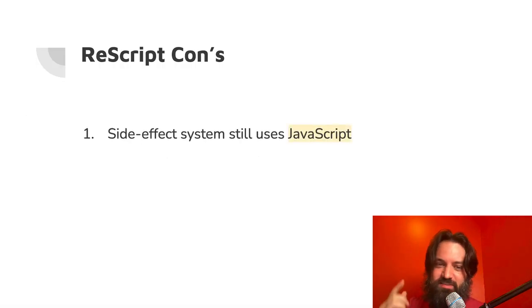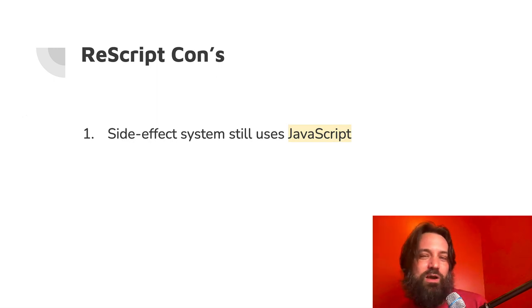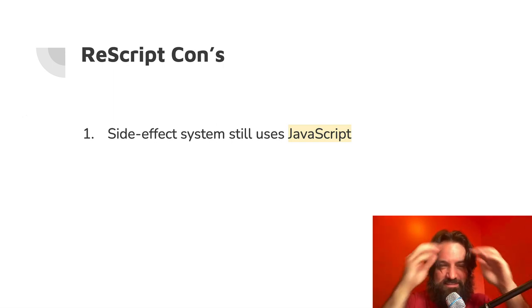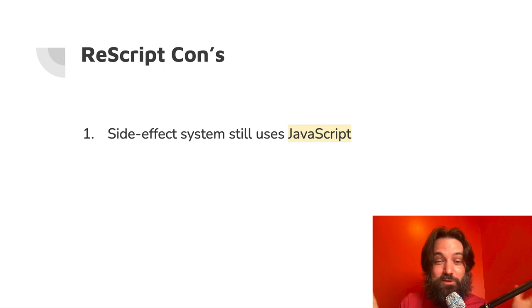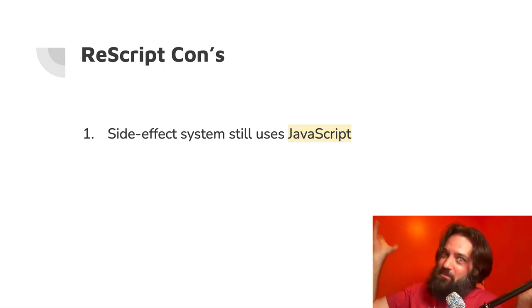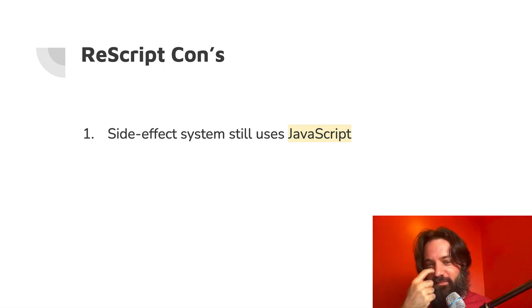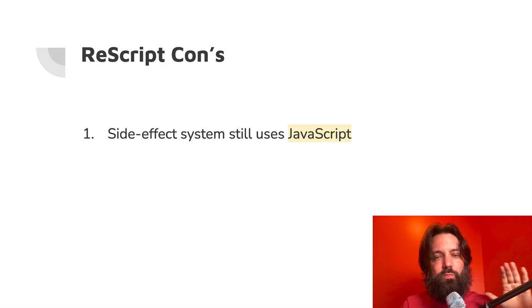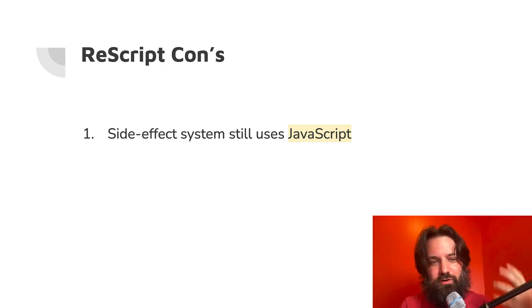Let's talk about the cons. The side effects system still uses JavaScript. If you come from Elm where there are no side effects — a magical world where everything's a wannabe actor pattern — this is a step down. ReScript is basically JavaScript with types. You still have side effects, you still have promises. Some null pointers can go away, but you still have the concept of a promise as a state monad wrapping your effect.